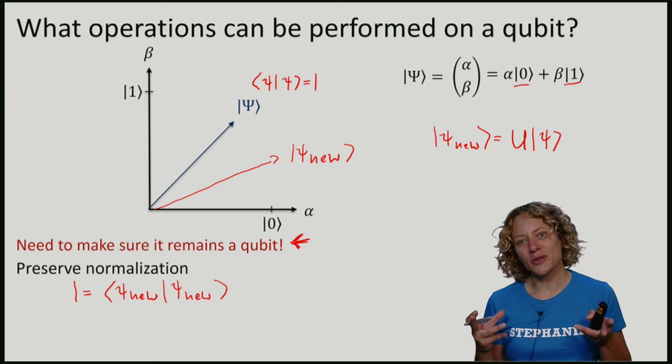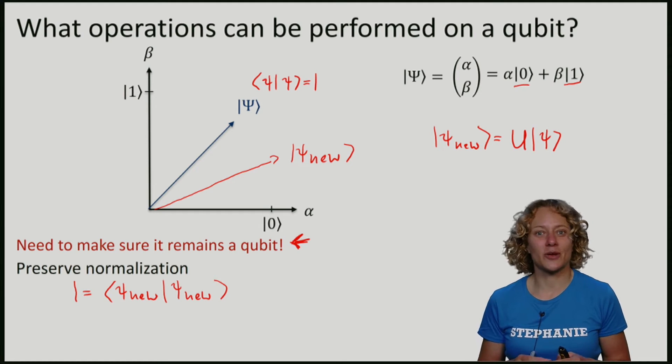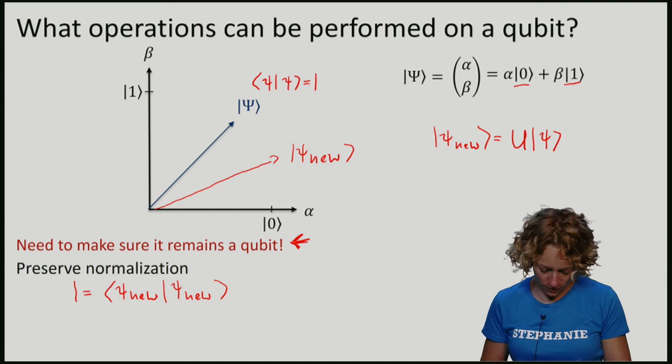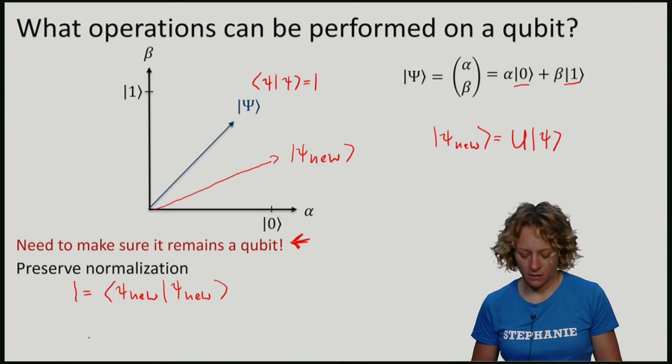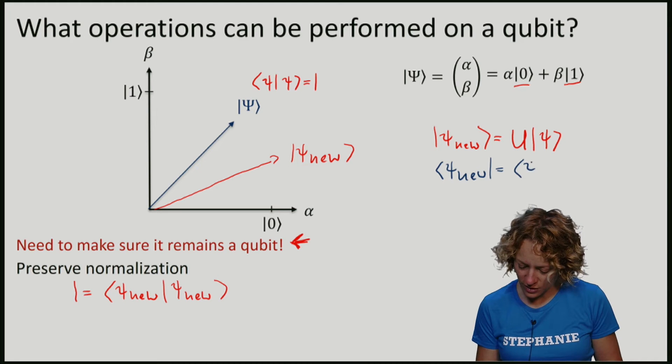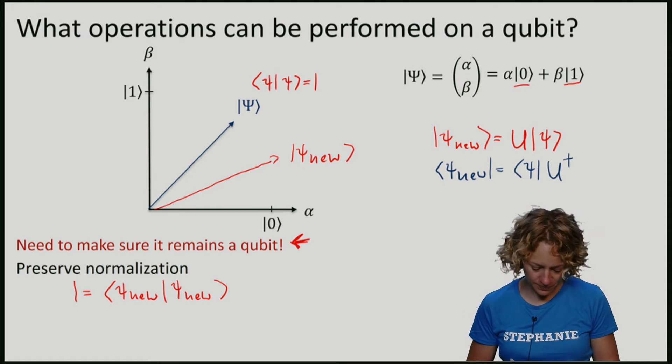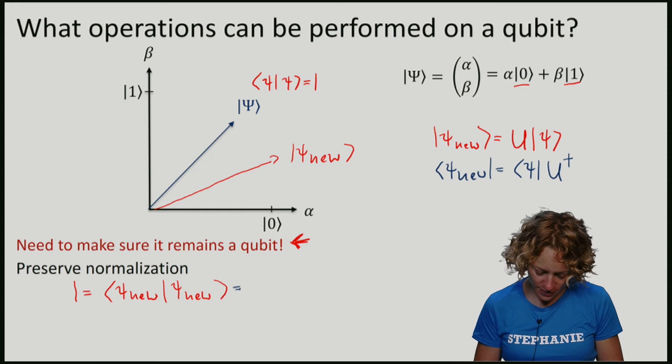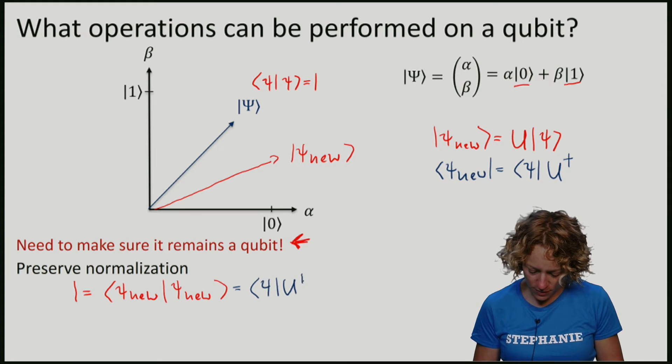So let me compute what this means in terms of the matrix U. Remember first that the definition of the bra is the conjugate transpose, so I take the conjugate transpose of Psi and the conjugate transpose of U, which we'll call U dagger. So if I write this out, I get this is equal to Psi U dagger U Psi.